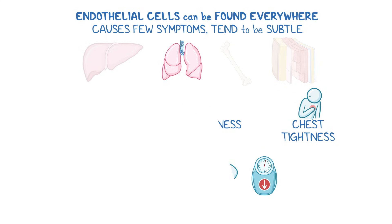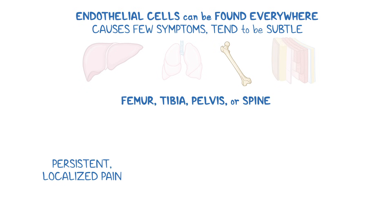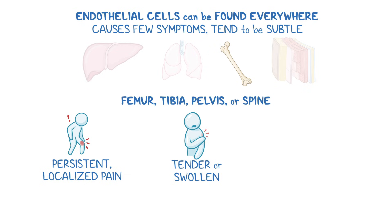Less commonly, EHE can develop in bones, especially weight-bearing bones like the femur, tibia, pelvis, or spine. People often notice persistent localized pain, similar to the soreness you might feel after accidentally bumping into furniture. The bone may feel tender or swollen, and in rare situations, the affected bone might become weak enough that a minor fall or twist causes a fracture.